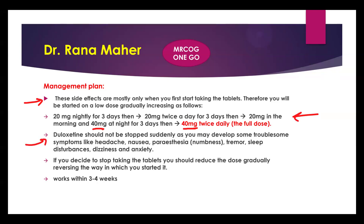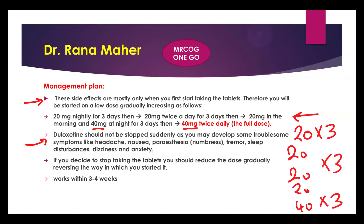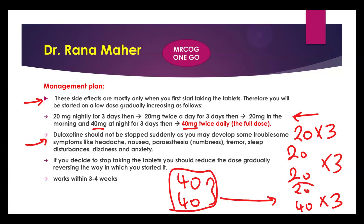A key safety point: tell the patient not to stop Duloxetine suddenly, as this causes troublesome withdrawal symptoms including headache, nausea, paresthesia or numbness, tremor, sleep disturbance, dizziness, and anxiety. To stop, taper in reverse order — reduce the morning dose first, then the night dose, step by step. Also inform the patient it takes three to four weeks to start working, so reassure her it won't work from the first day or first week.